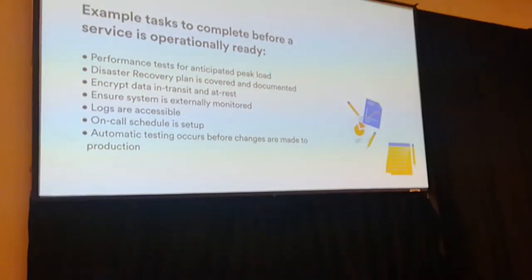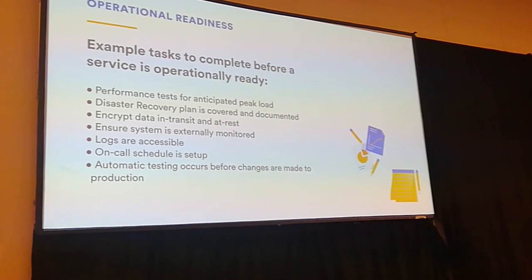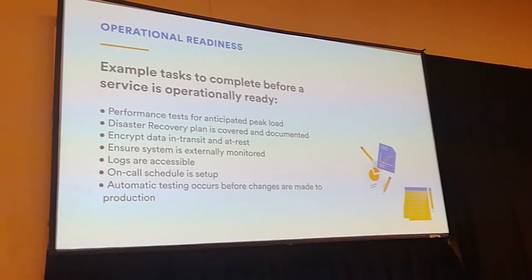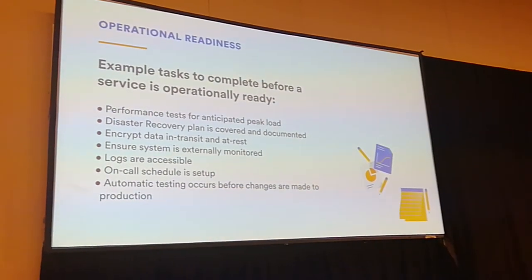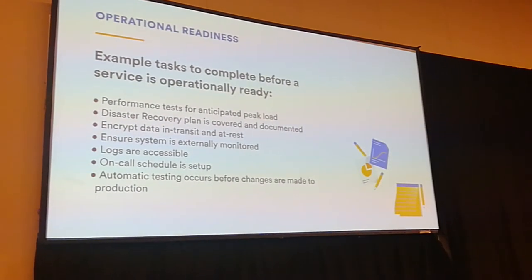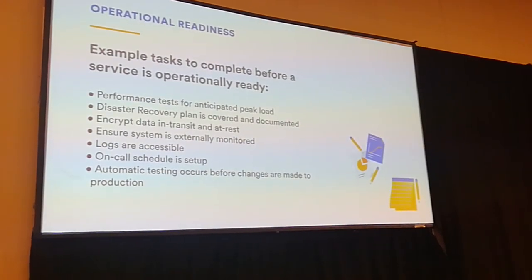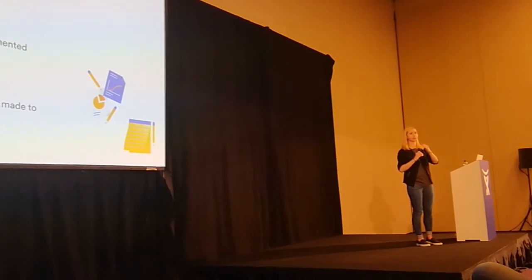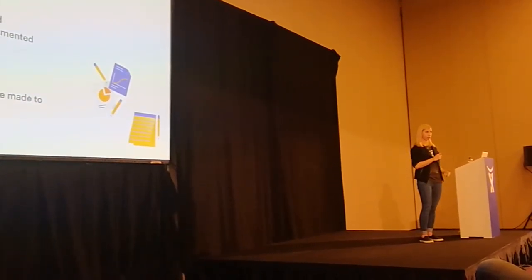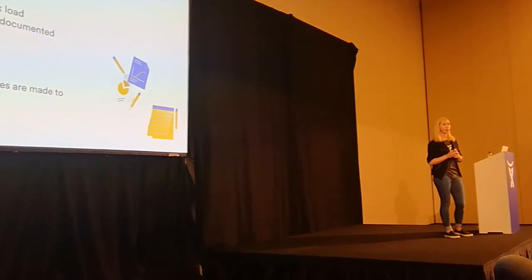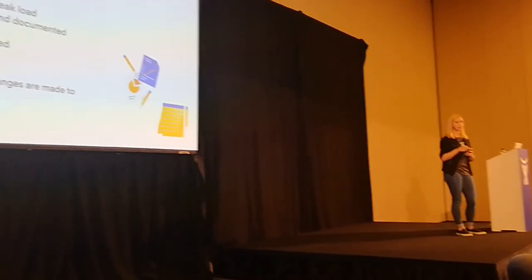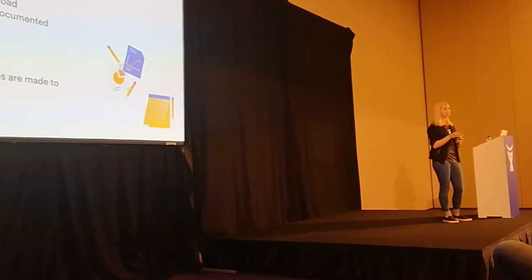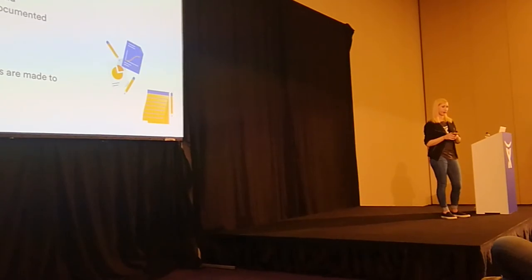For our checklists, we look at a system and determine its tier. Tier zero is critical — for us this is infrastructure like AWS; if it goes down, you're having a very bad day. Tier one is also very critical, such as the ability to log in. Tier three is least important — something like an internal analytics tool that isn't customer-facing. A tier three service has a much shorter checklist than a tier zero. Examples of things we check before deploying: have we done performance tests or load tests, do we have disaster recovery plans, is it externally monitored, and are logs accessible — not just that you're logging, but that you can go read them.